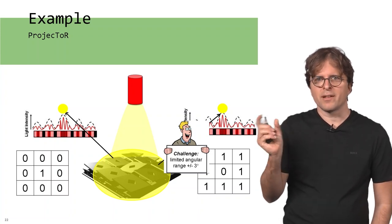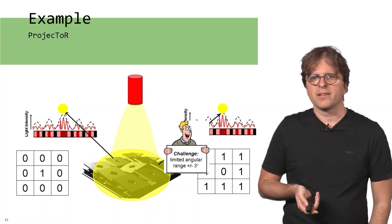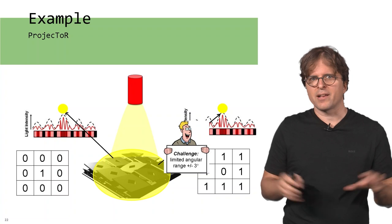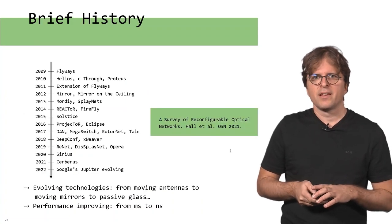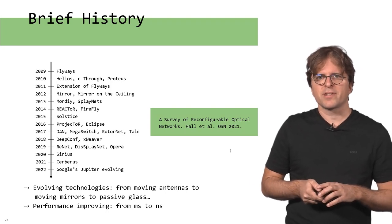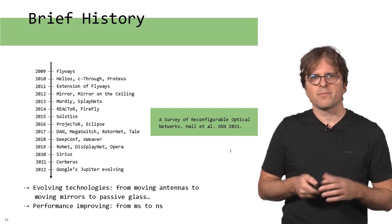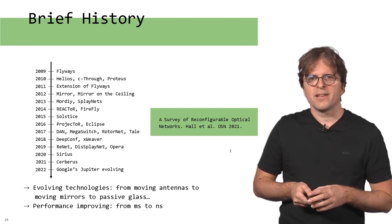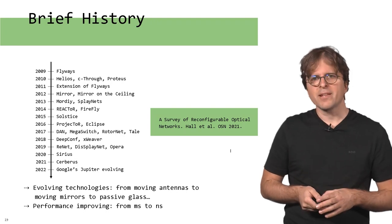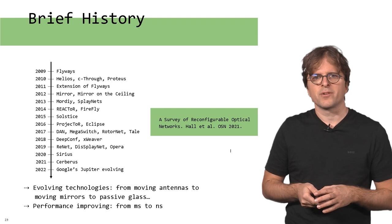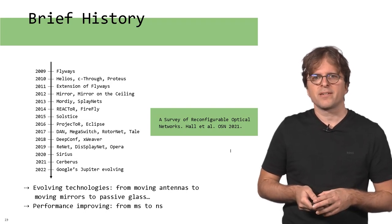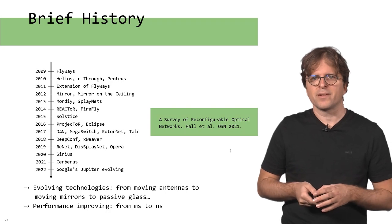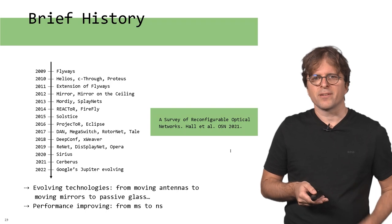One challenge with this technology is that you can only rotate by something like plus or minus 3 percent, but researchers have been working to generalize this technology to reach larger data centers. Such reconfigurable optical networks have been around for quite some time. Early proposals date back to something like 15 years ago - proposals like flyways, helios, et cetera. More recently, there is also technology by Google and Microsoft. For example, Google's Jupiter evolving technology or Sirius from Microsoft, Cerberos. It's still a very active field, and if you want to get an overview, there are surveys on these technologies.